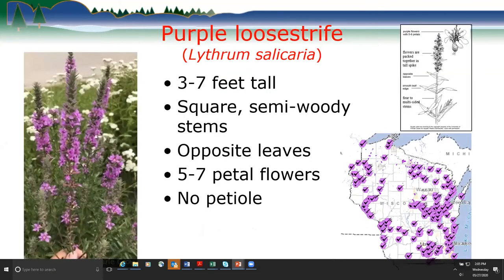The first species is purple loosestrife, which is widely established in Wisconsin — you can see the map in the lower right corner. Purple loosestrife grows three to seven feet tall with a square, semi-woody stem and opposite leaves. It has five to seven petals on its flowers with no petiole, meaning the flowers grow directly off the stalk rather than on side branches. You'll see a tight spike of bright purple, almost magenta flowers, typically along road ditches.